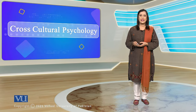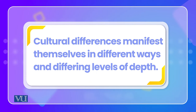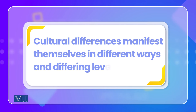Manifestation of culture — culture zahir kaise hota hai? Cultural differences char level pe manifest hoti hai in different ways, and these four levels have different depths.